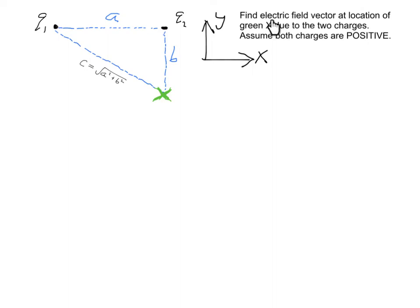In this problem we want to find the electric field vector at the location of this green x due to these two charges. We're going to assume that both of those charges are positive. The two charges are separated by distance a, and this length b is perpendicular to length a. The first thing we want to do is sketch the contributions to the electric field from each charge. The electric field at the green x due to charge 1 will point away from charge 1 because it's positive.